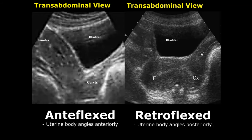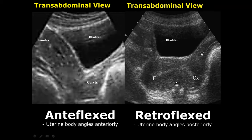In the anteflexed uterus, the body of the uterus will face anteriorly — there will be a bend and this angle will face towards the bladder, that is anteriorly. In the retroflexed uterus, there will be a bend in the uterine body and this angle will face posteriorly, away from the bladder.